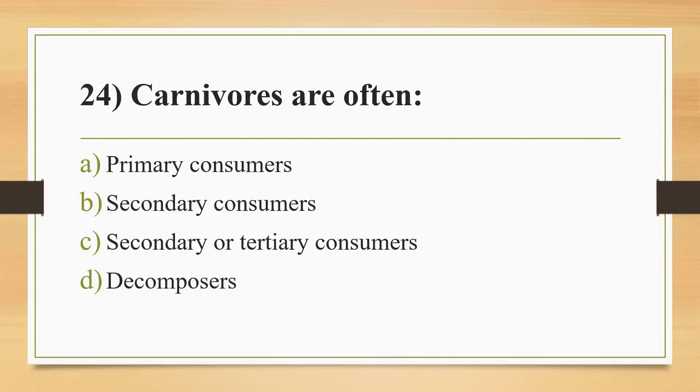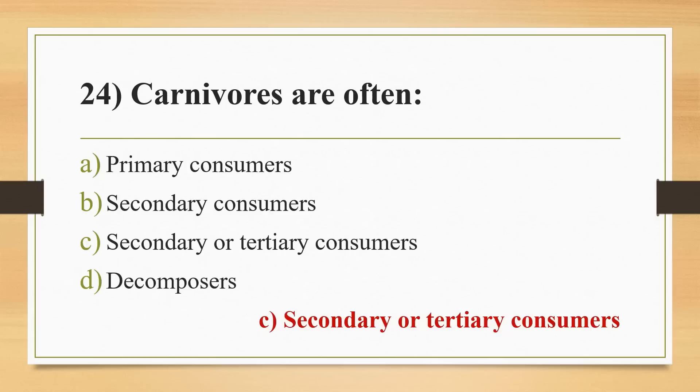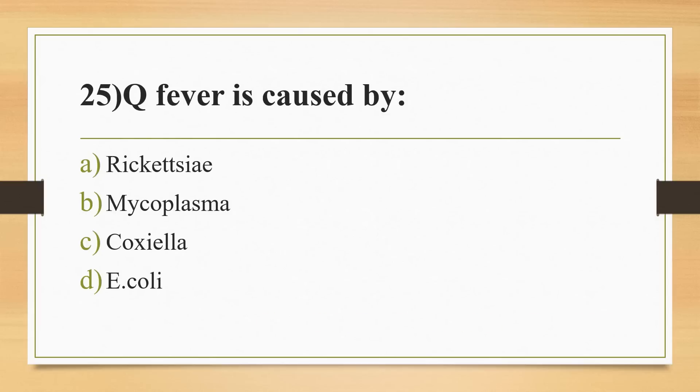Twenty-fourth question: carnivores are often? Options: primary consumers, secondary consumers, secondary or tertiary consumers, or decomposers. Answer is Option C, secondary or tertiary consumers. Twenty-fifth question: Q fever is caused by? Options: Rickettsia, Mycoplasma, Coxiella, or E. coli. Answer is Option C, Coxiella burnetii.